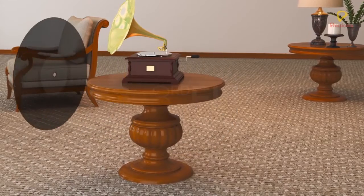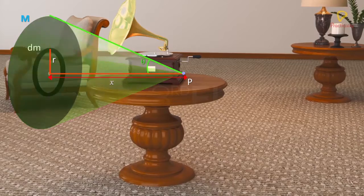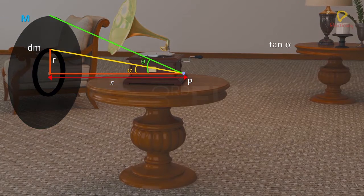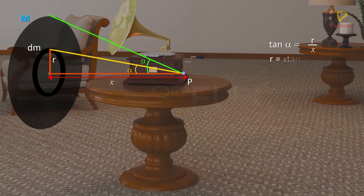Let the periphery of the disc subtend an angle theta at P and the ring subtend an angle alpha at P. From the right angle triangle, tan alpha equals r by X, therefore r equals X tan alpha.